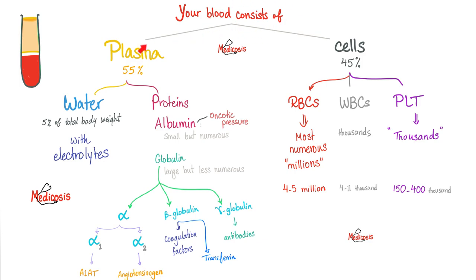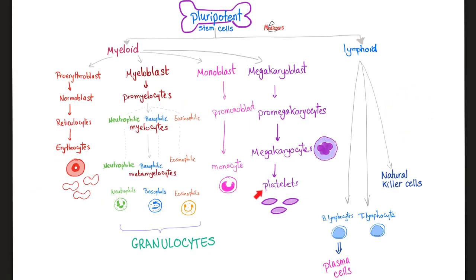Your blood is made of plasma and cells. The cells include red blood cells, white blood cells, and platelets — though technically, platelets are not even cells. They are just pieces of their mother, the megakaryocyte. Platelets come from megakaryocytes, which come from promegakaryocytes, which come from megakaryoblasts, which come from myeloid stem cells, which come from pluripotent stem cells in the bone marrow.